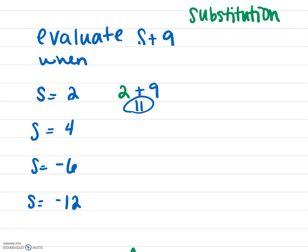Now we need to evaluate s plus 9 when s equals 4. Again, s is playing really hard, it's tired — we're going to swap 4 in for s. So now we have 4 along with the rest of his teammates. Now that we have a number in for s, we can simplify: 4 plus 9 would be 13, and that would be our answer.